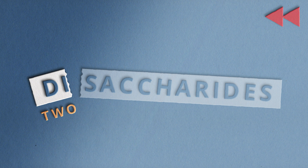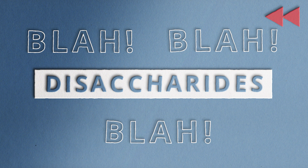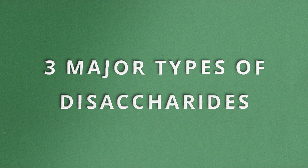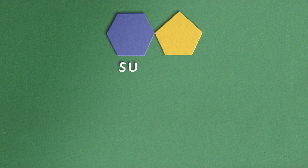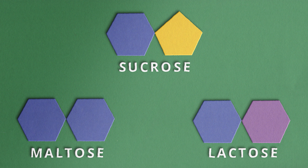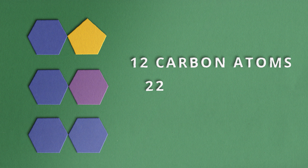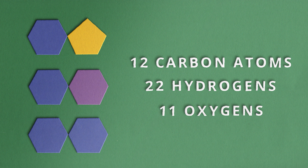There are three major types of disaccharides: sucrose, lactose, and maltose. All three have something in common — they all have 12 carbon atoms, 22 hydrogens, and 11 oxygens.